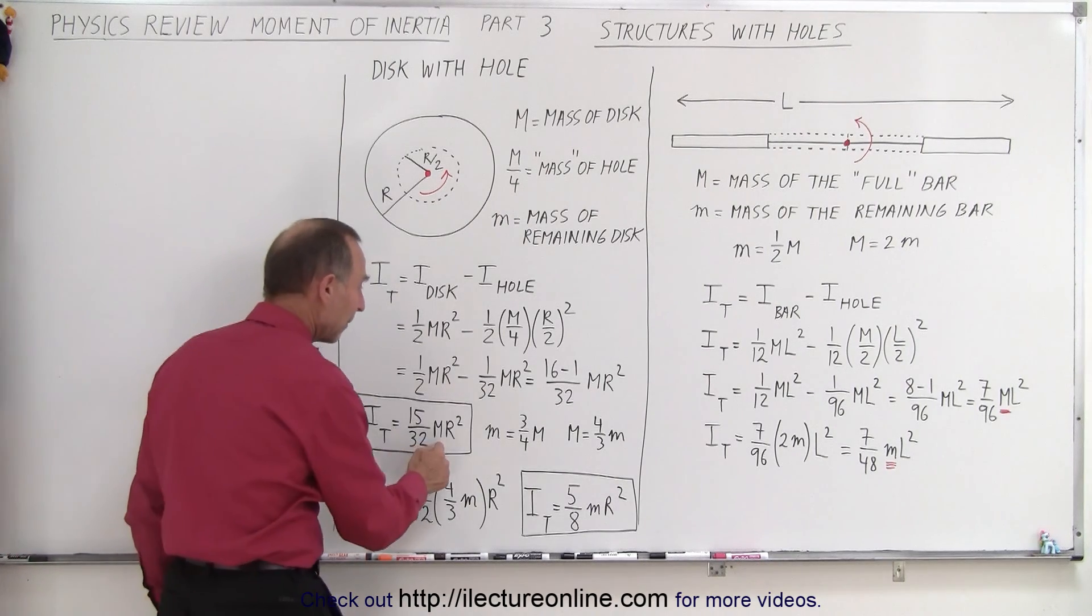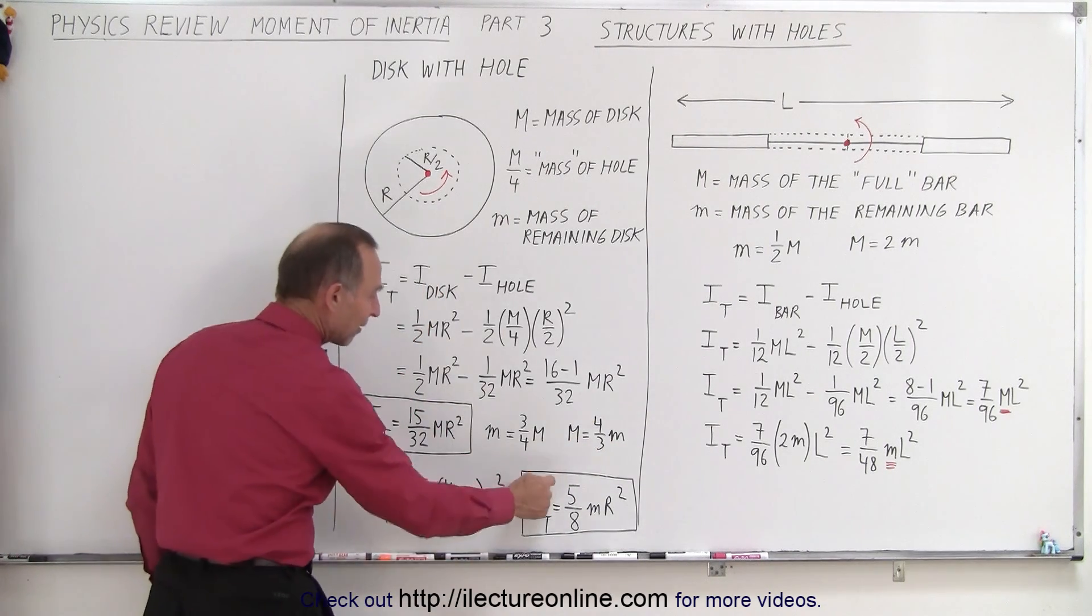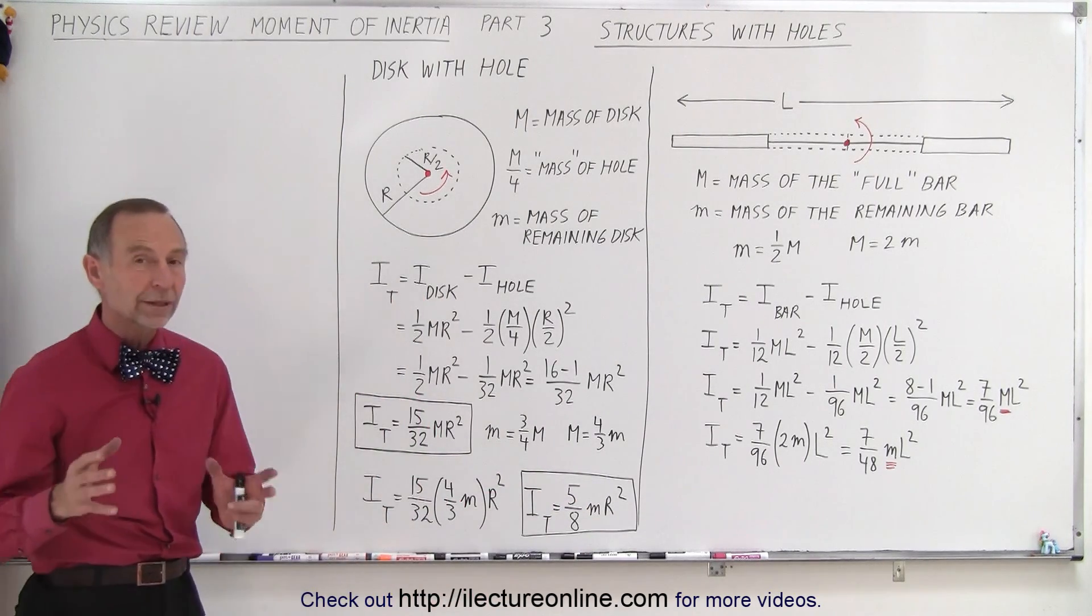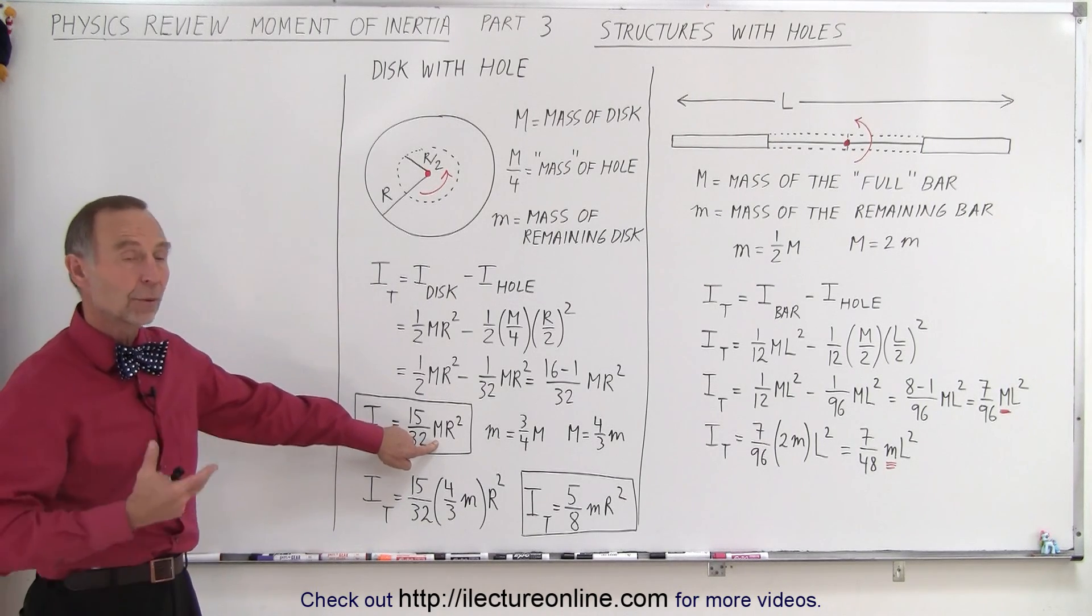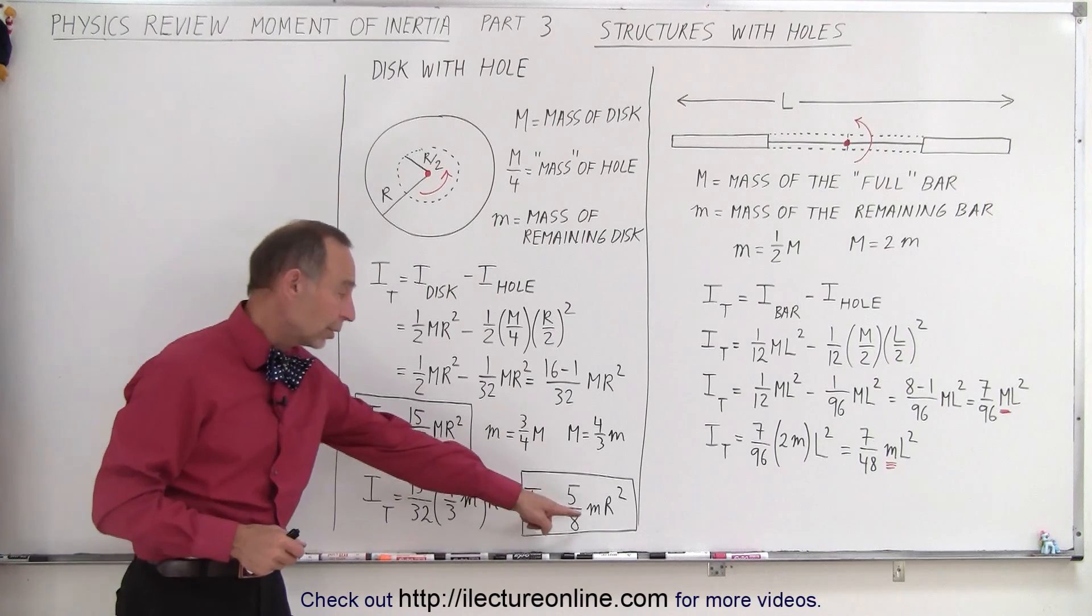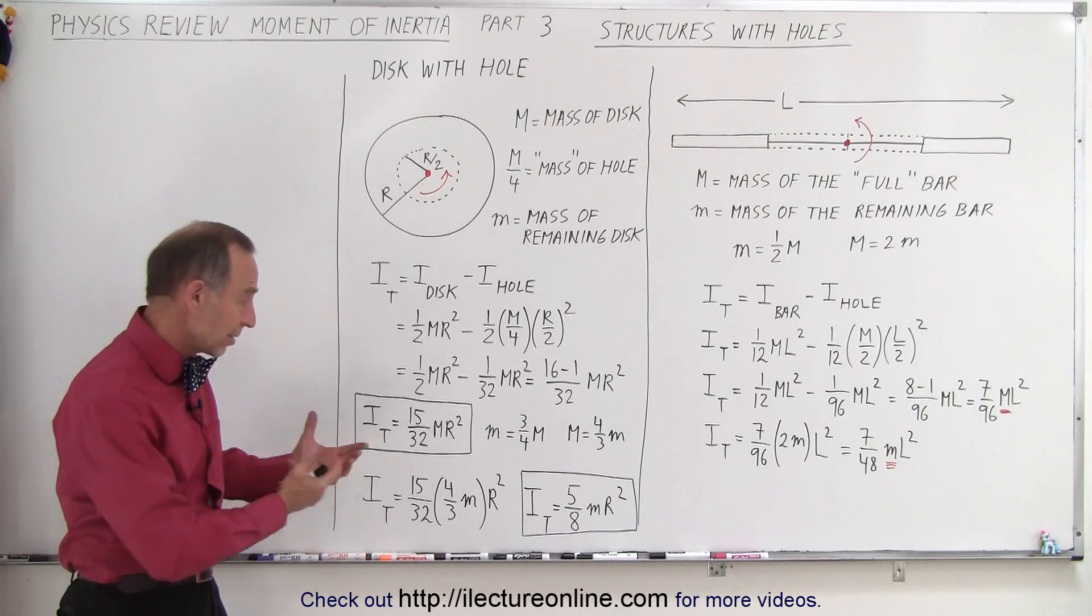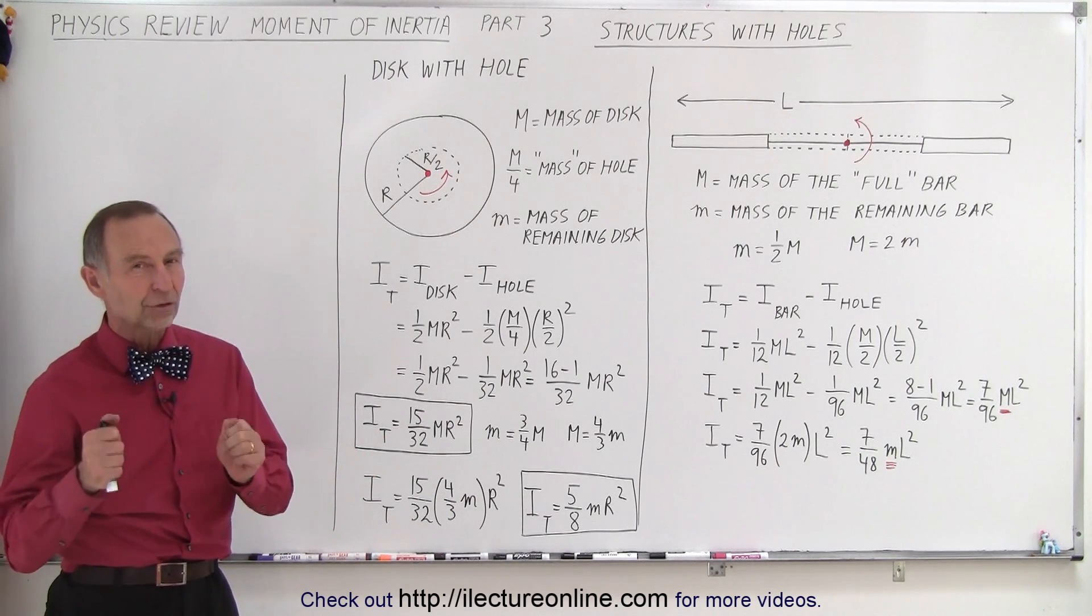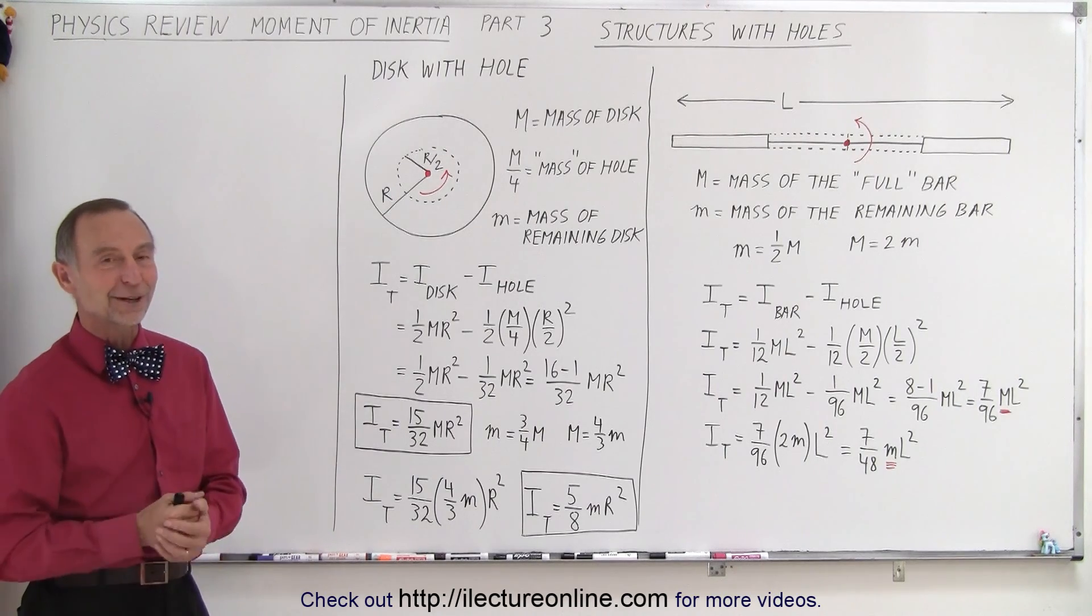If we then replace M by 4/3 little m, then we get 5/8, the mass of the remaining disk times R squared. So it really depends what the answer is that they want. Do they want it in terms of the mass without the hole, or do they want it in terms of the mass with the hole? You can see, you can easily get one from the other, so you don't need to worry about it, except understand exactly which mass they're referring to. And that is how it's done.